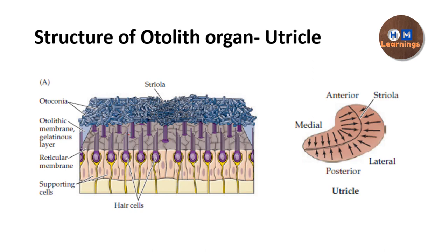There is another component present in the otolith organs that is not in the semicircular canals or in the cochlea — the striola. The striola divides the macula into two regions. You can see that the orientation of the hair cells is reversed on either side of the striola. The kinocilium — the tallest stereocilium — points in one direction on one side but in the opposite direction on the other side. This is called morphological polarization.